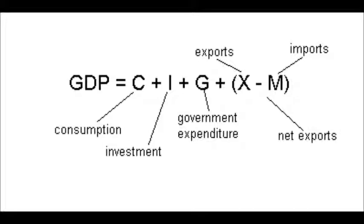One way GDP could be calculated is by using the expenditure approach, which is defined as total annual expenditures on four categories of final goods and services. These four categories are consumer goods and services, business goods and services, government goods and services, and net exports or imports of goods and services.